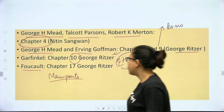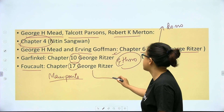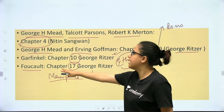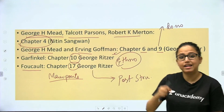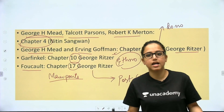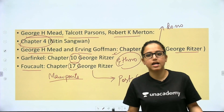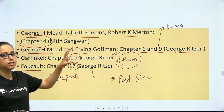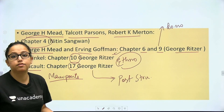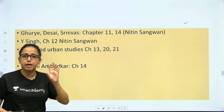Foucault ke liye aap log chapter 17 dekhna — George Ritzer ka — jahan par post-structuralism likha hai. Post-structuralism bol ke ek chapter hai, usme Foucault ka topic kaafi achhe se cover kiya gaya hai. So these are certain thinkers jo directly aapko materials mein mil rahe hain. Ab kaafi saare aise thinkers hain jo directly available nahi hain — jaise Alfred Schutz ya Karl Mannheim, etc. For them, there are certain websites jo main aapko end ke taraf bataungi. Jo aapke paas available hain directly kitabon mein, main ne chapters bhi likh di hain — you people just have to open and read them.